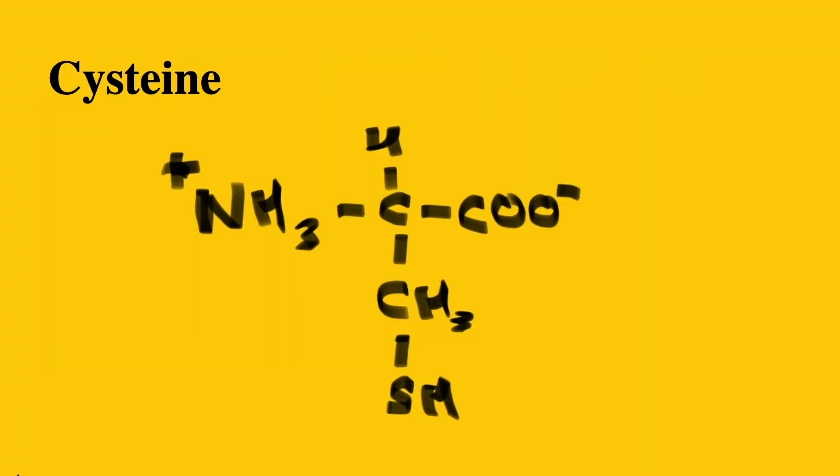The cysteine amino acid has a sulfhydryl group. This is an SH group. This group contains a sulfur atom covalently bonded to a hydrogen atom.